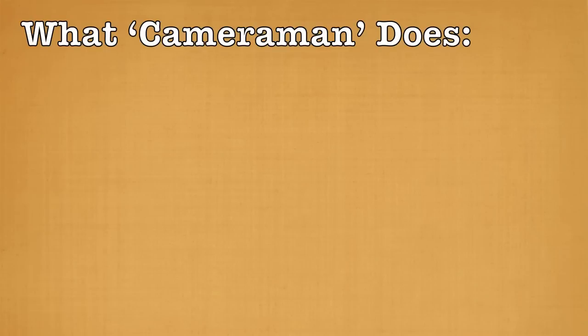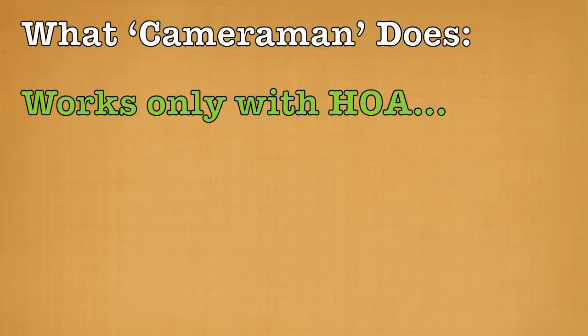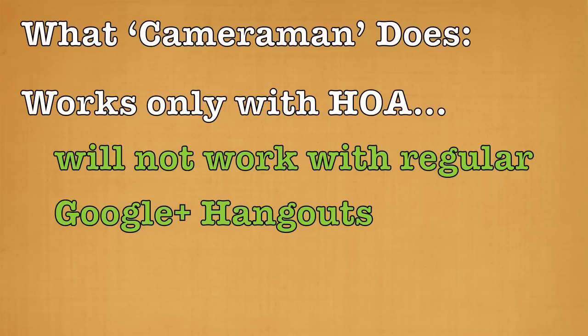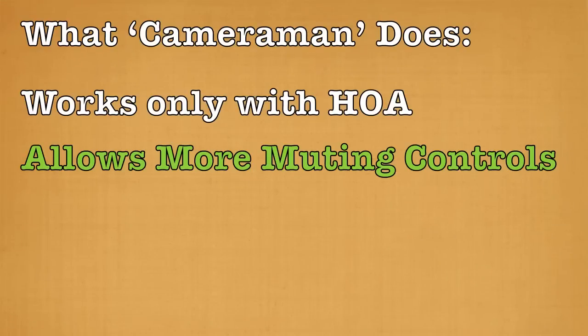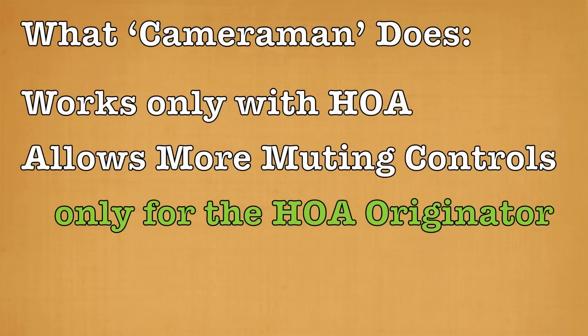What Cameraman does is it works with Hangouts on Air — it does not work with regular Hangouts. It's automatically included now; Google Plus has added it to your Hangout area, and it allows you more muting controls. But the person it allows it for is the originator of the Hangout only — nobody else but the originator can use these particular controls.